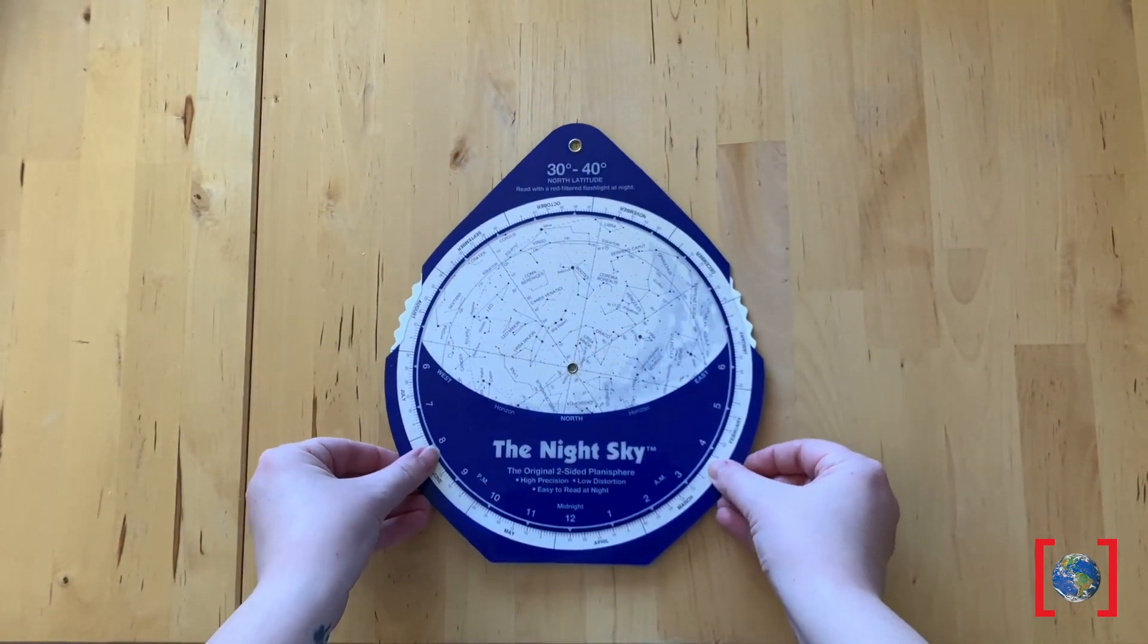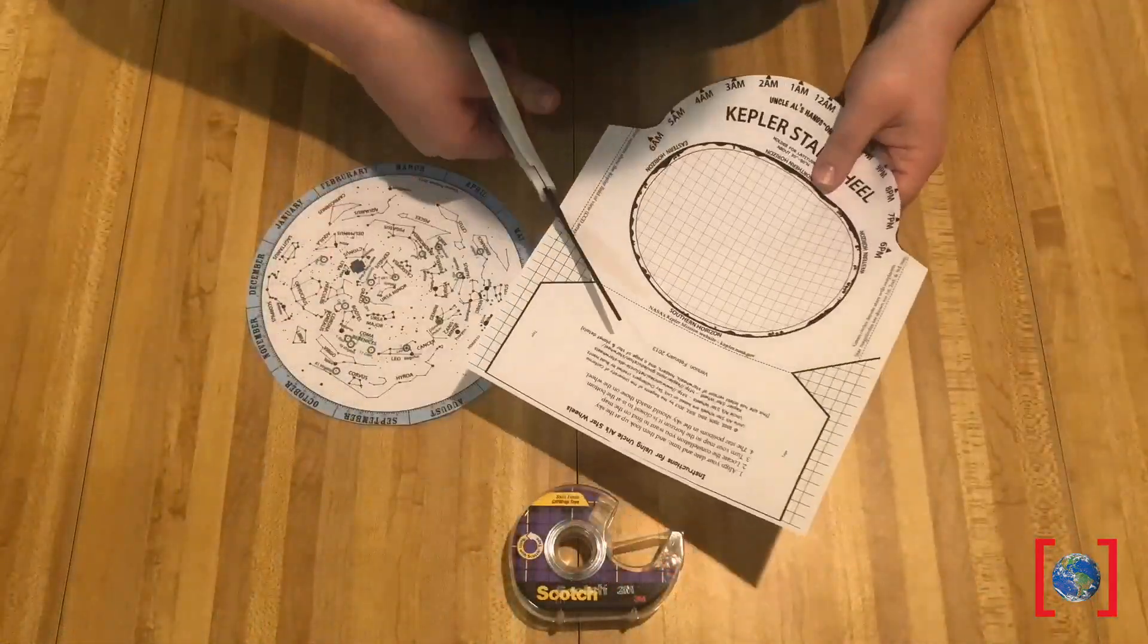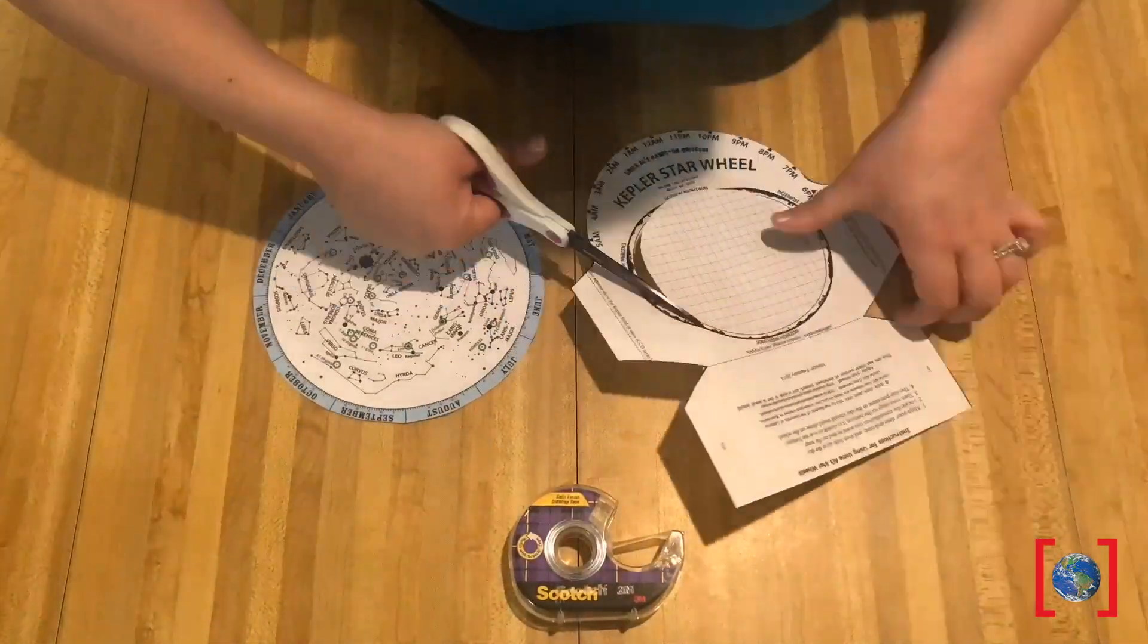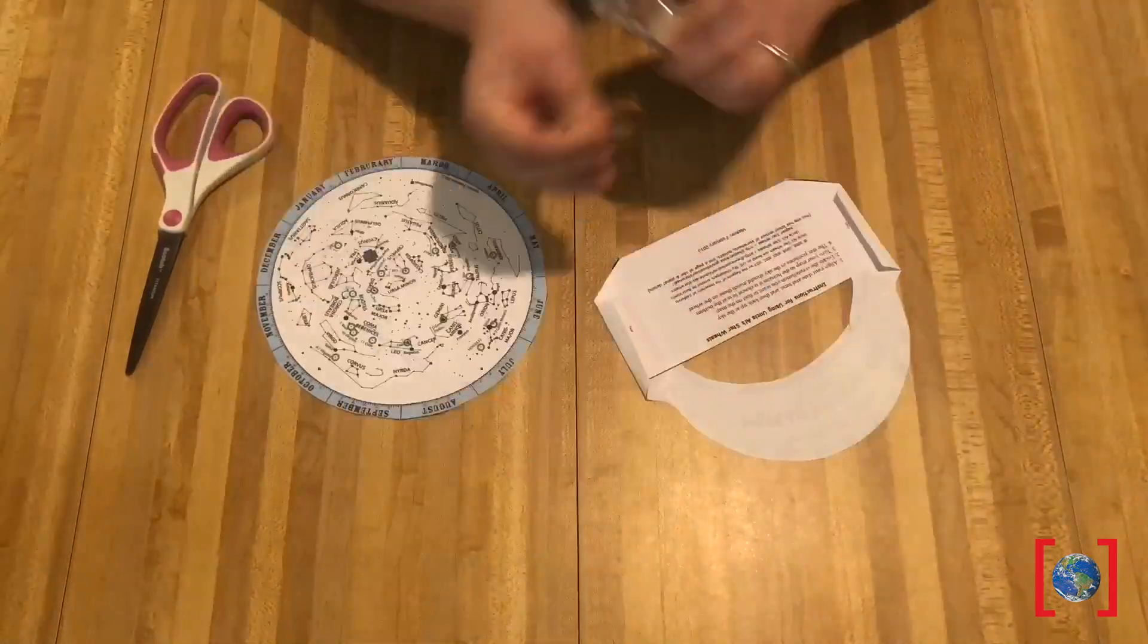But if you can't order a star wheel, maybe you can make your own. My friend Jessica here, she printed one off of our own website. This is a star wheel that NASA helped create. All you need to make it are scissors and some tape.